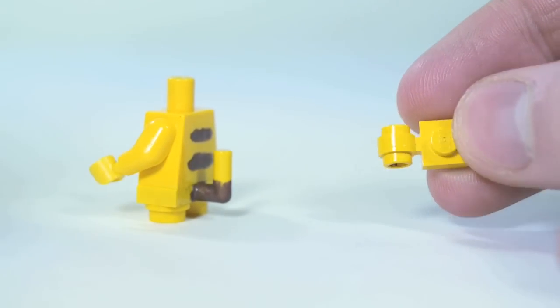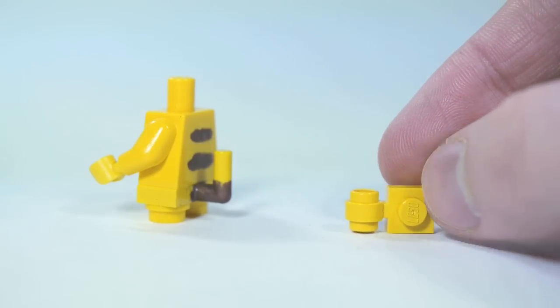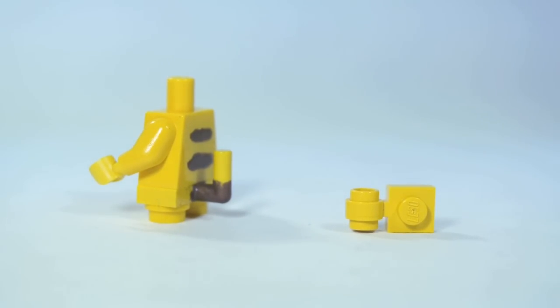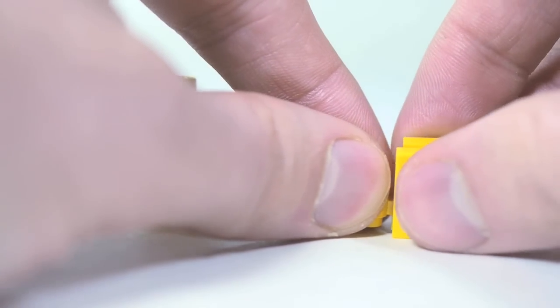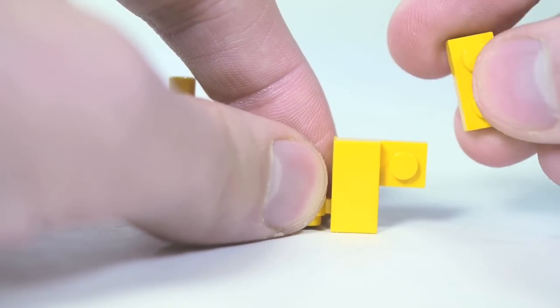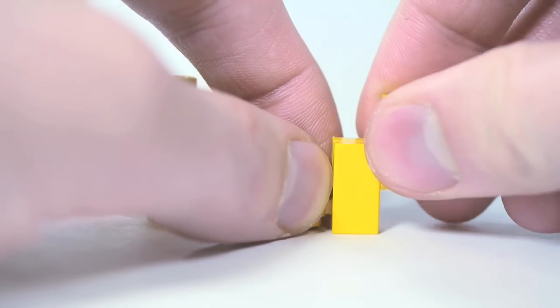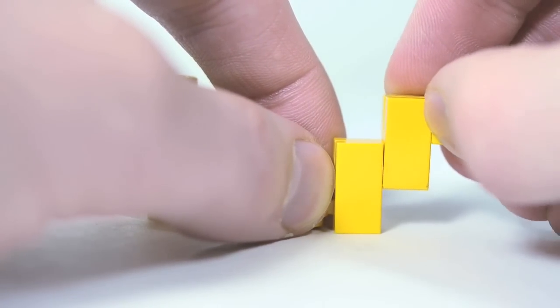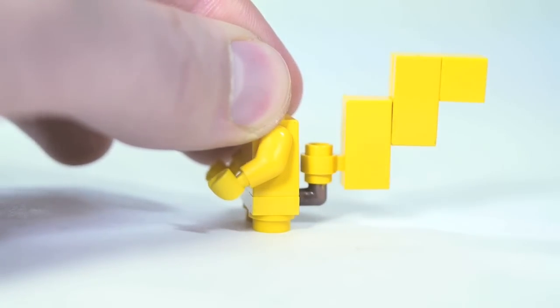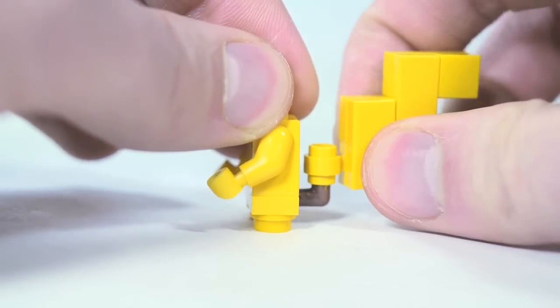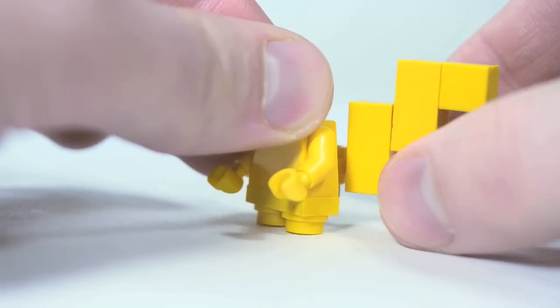For the tail, taking a 1x1 plate with a round clip on the end. 1x2 tile. 1x2 plate. 1x2 tile. 1x2 plate. 1x1 tile. So the nice lightning bolt tail there. And what's nice is that it can then twist to the side or the back based on how you want it to go.